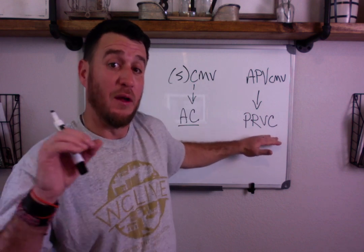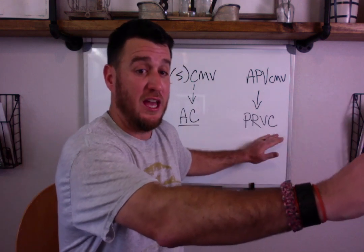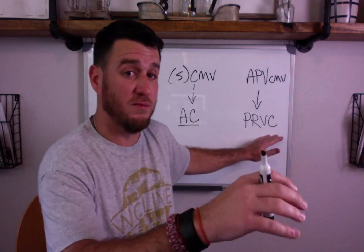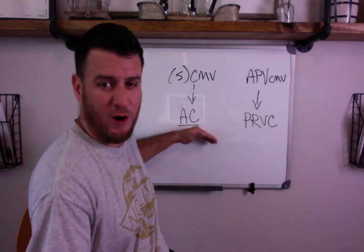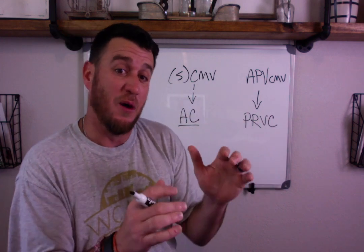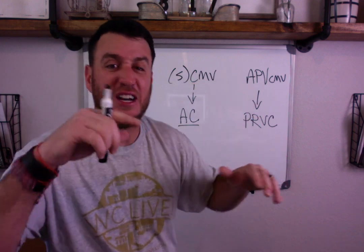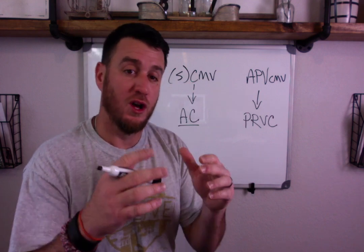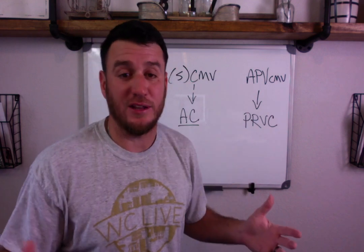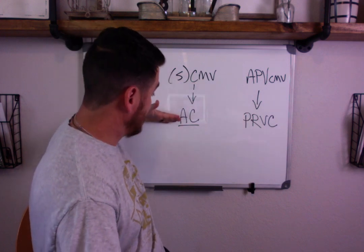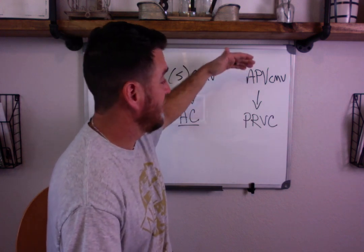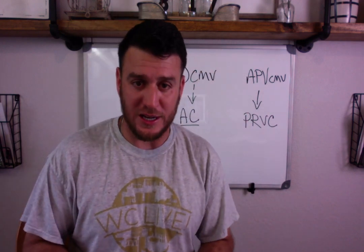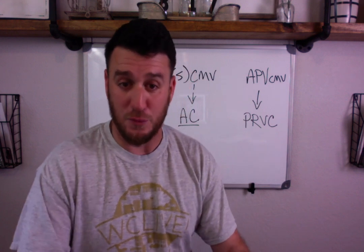AC, by contrast, is open-loop ventilation — what the vent does is independent of anything that comes back from the patient. So there you have it: SCMV is the same as assist control, and APV-CMV is the same as PRVC. I hope that clarifies things — let me know if it doesn't and I'll put out another video.